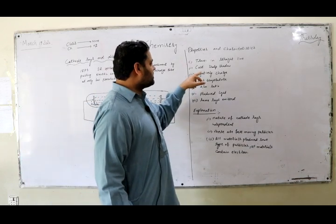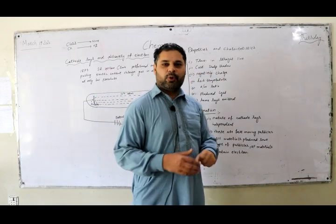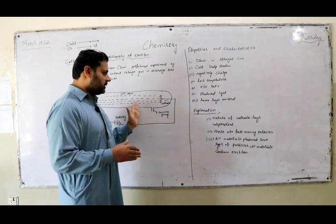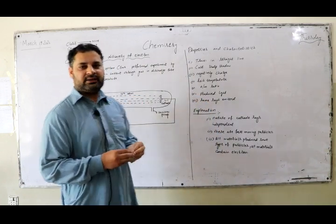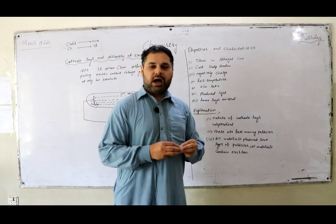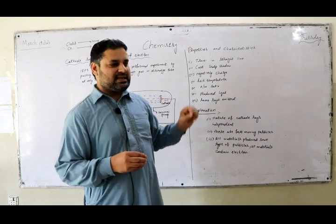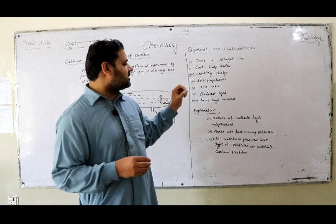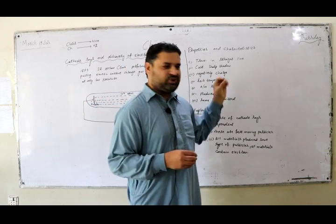Number 2: These rays cast a sharp shadow of an opaque object if placed in their path. If any object is placed in the path of these rays, they create a sharp shadow of that object.